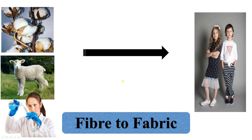So let's begin our chapter, Fiber to Fabric. In this chapter, we will learn how fibers which we get from plants, animals, and chemicals are ultimately converted into fabric with which our clothes, bedsheets, curtains, etc. are made. It is such an interesting chapter — you just have to watch the video till the end.